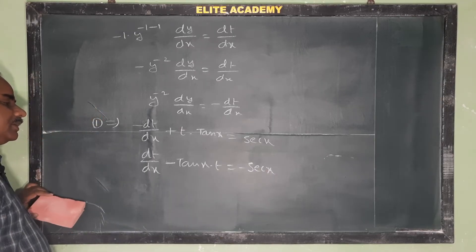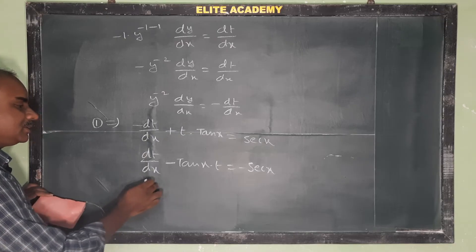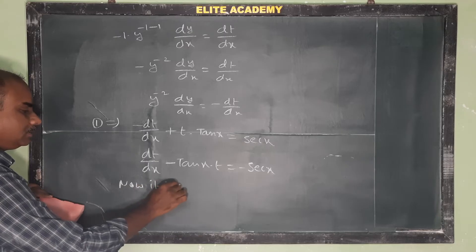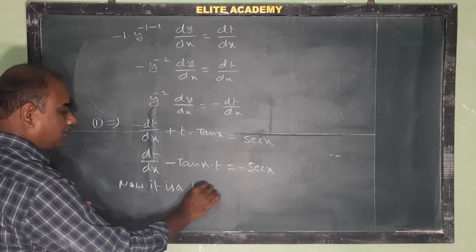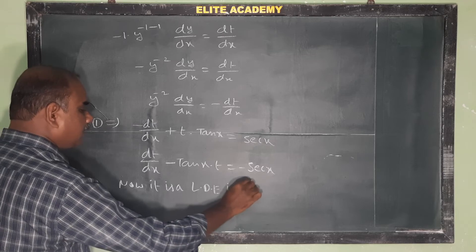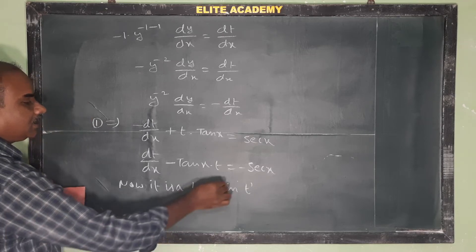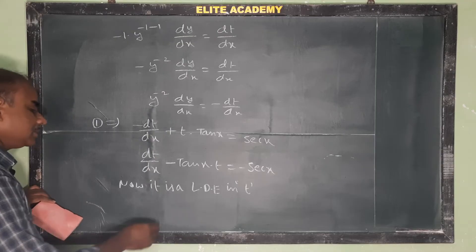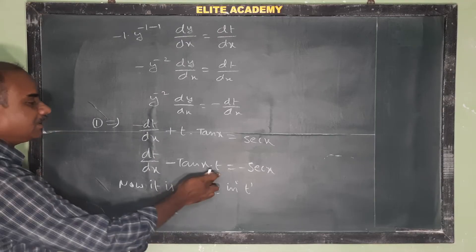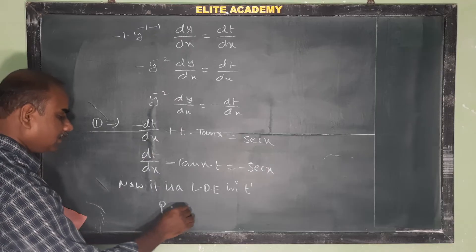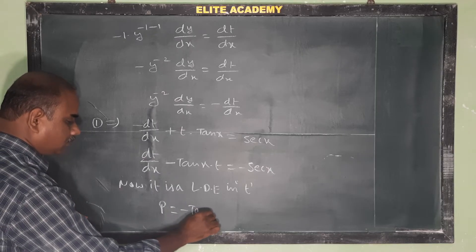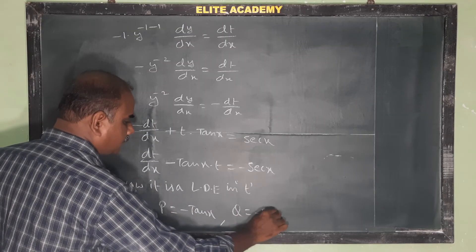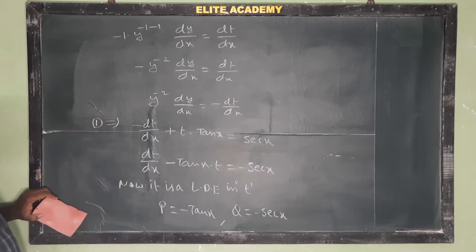Now it is a linear differential equation in terms of t. LDE in the variable t. Here P = -tan(x) (coefficient of t) and Q = -sec(x) (right-hand side).